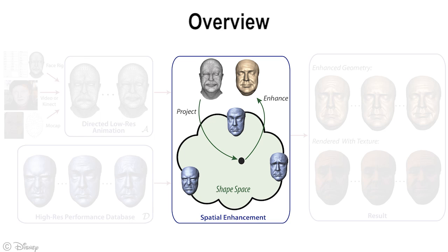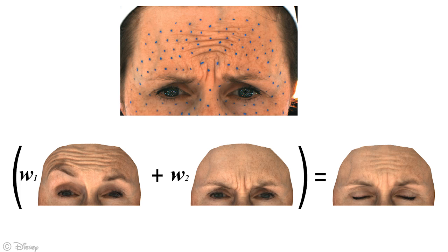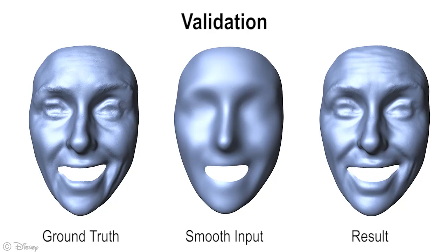Our algorithm can enhance both the spatial details as well as the temporal dynamics of the performance by matching the input sequence to the database in shape space, and then transferring the missing details to the input animation. Here we show an example where the input expression at the top is not in the database, so our algorithm automatically blends between two different database frames to create a closely matching result.